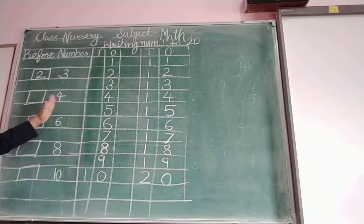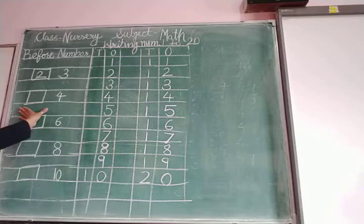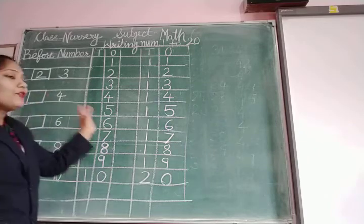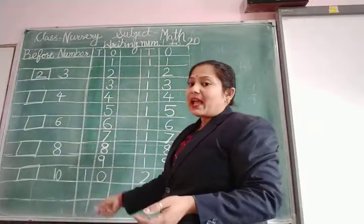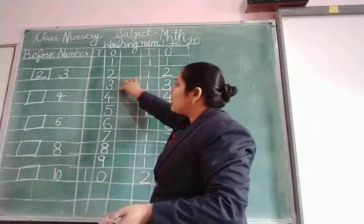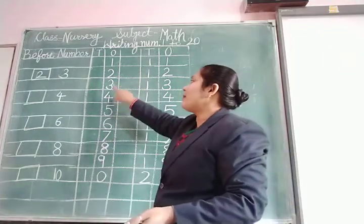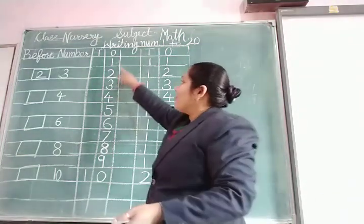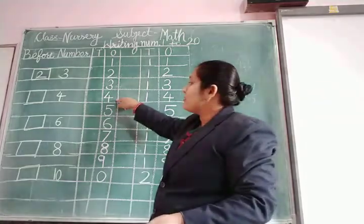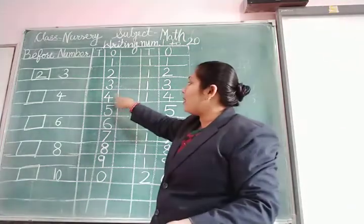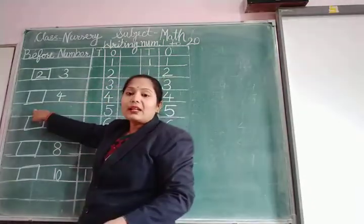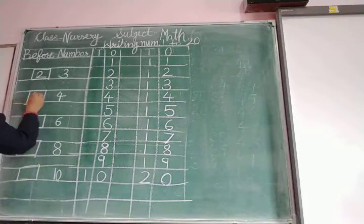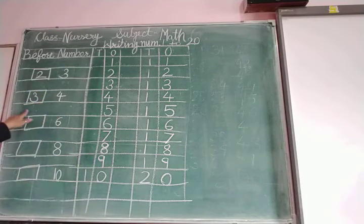Now our next number is number 4. 4 ke pehle box banana hoa hai. Once again: 1, 2, 3, 4. 4 number ke pehle kaun sa number hai? Number 3. 1, then 2, then 3, then 4. Which number is before number of 4? Number 3. So here we write number 3. 4 ka pehle kaun sa number hai? Number 3.